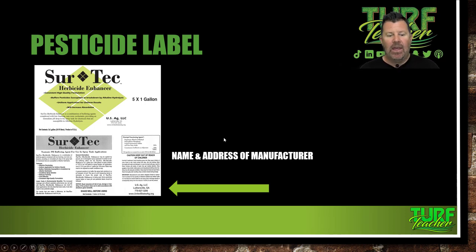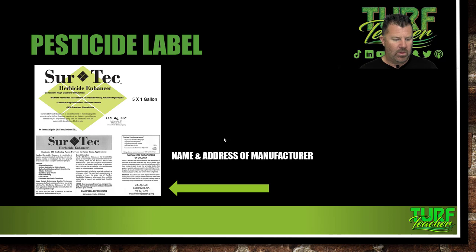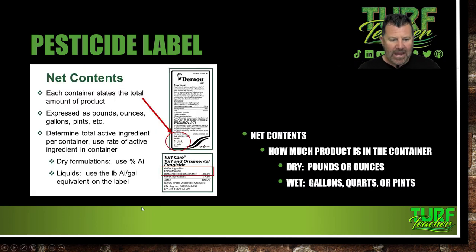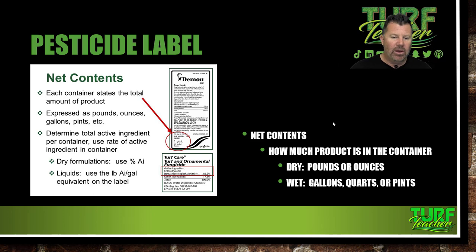Name and address of the manufacturer — it's USAG LLC out of Luthersville, Georgia. It's got their phone number and website. Here's SureTech — this is a herbicide enhancer. Net contents: how much product is in the container? If it's a dry chemical it's going to be pounds or ounces. If it's wet, it's going to be in gallons, quarts, or pints. Demon EC is an insecticide — an emulsifiable concentrate — there's one pint. The active ingredient is 82.5% and the other inert ingredients are 17.5%. So that's a fairly high concentrate of insecticide — very, very powerful.